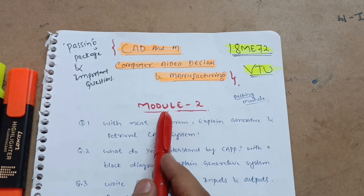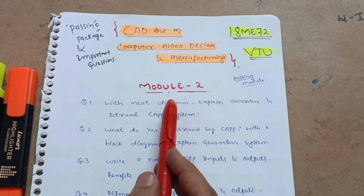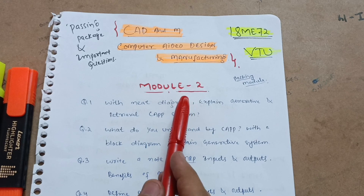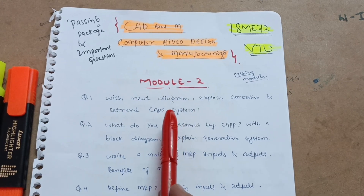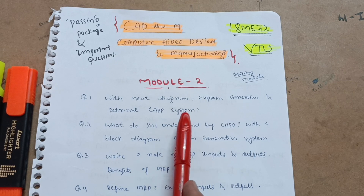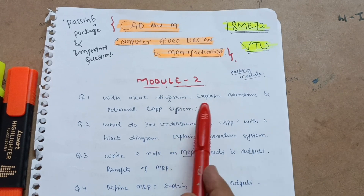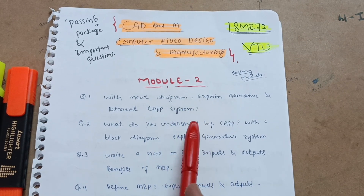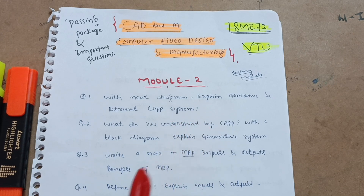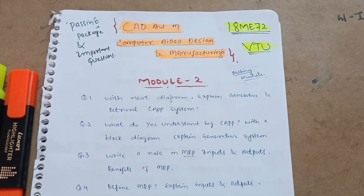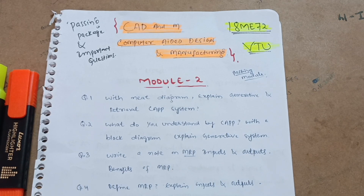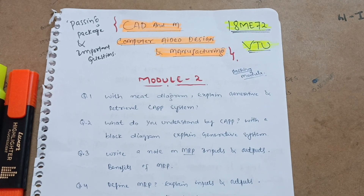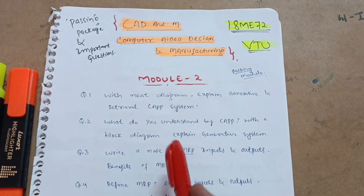First, let's take Module 2. It consists of two chapters: the first is the Computer Aided Design process, and the second is the CAPP system. You have to focus on the second chapter only, because in the first chapter there are some numerical problems. If you practice those numericals it's your choice, but I have taken the theoretical concepts only. Four questions are from this module, and if you check your previous year question papers you will get only four questions in that chapter.